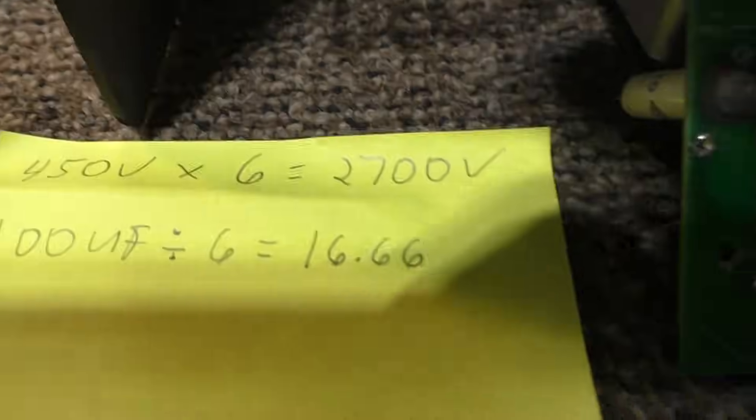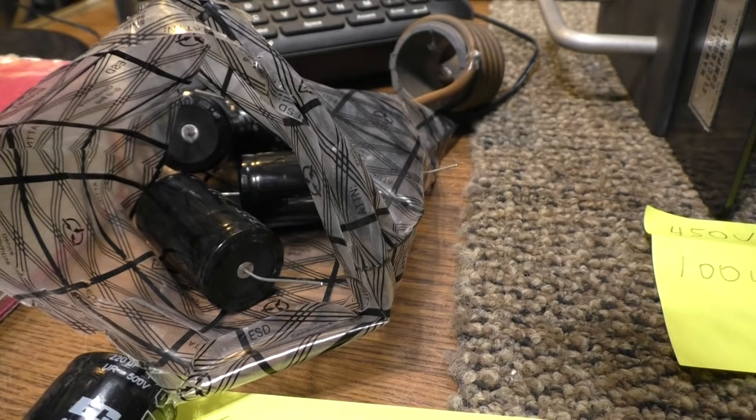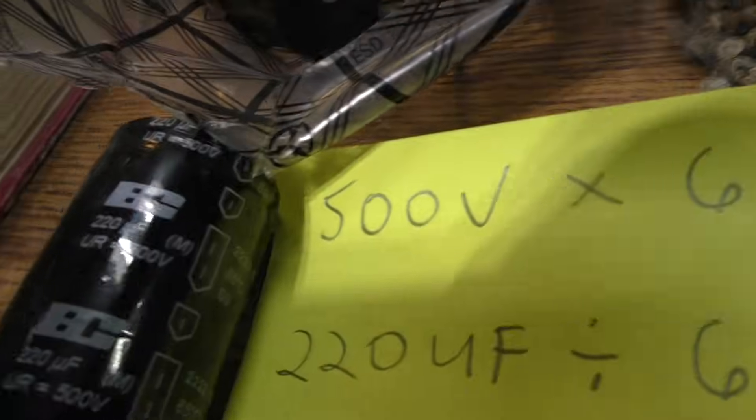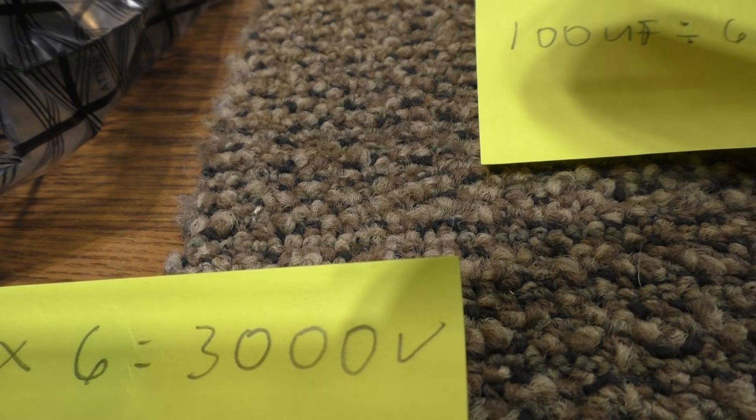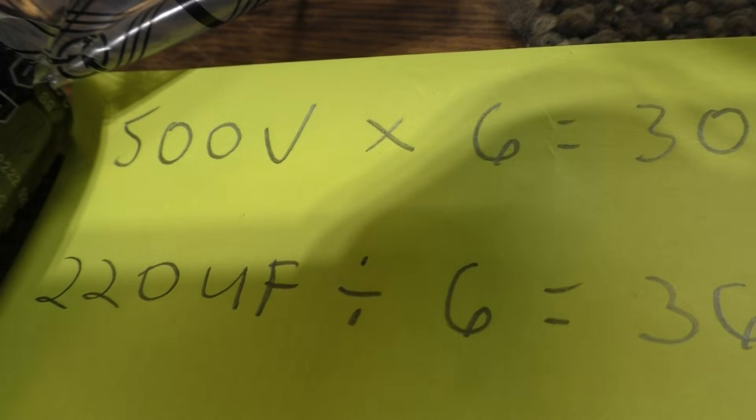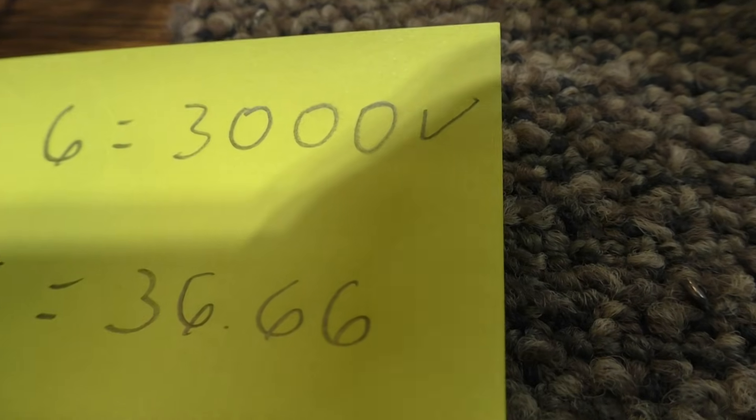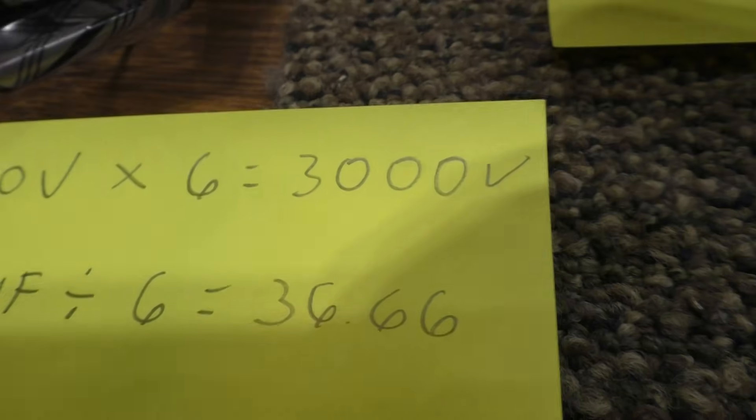So anyway, this one is inadequate on both the voltage and the UFs. So he wants me to recap it. And he actually bought the caps here, which are now 500 volt, 220 UFs. So the 500 volt times 6, it gives you a 3000 volt rating instead of the 2700 volt rating over here. And the 220 UF divided by 6, it gives you 36.66 UF. If my math is right.